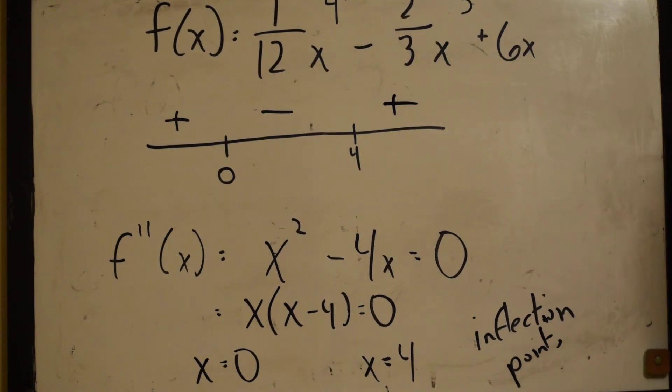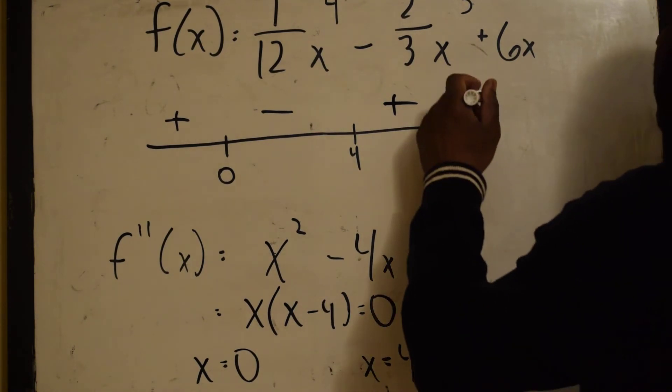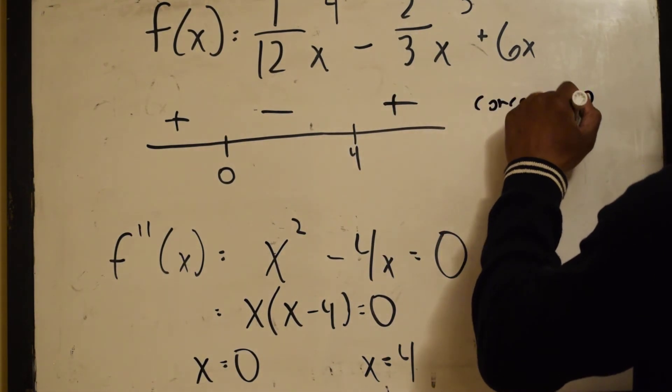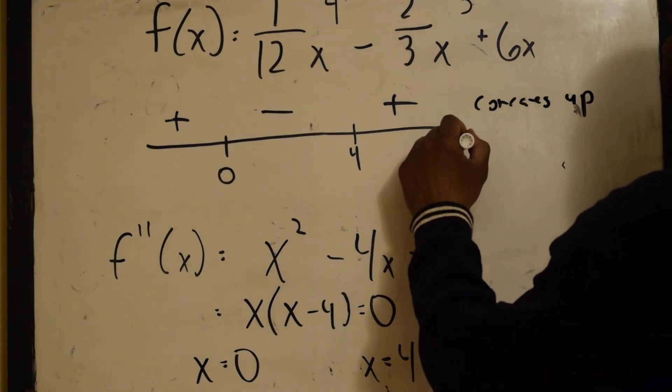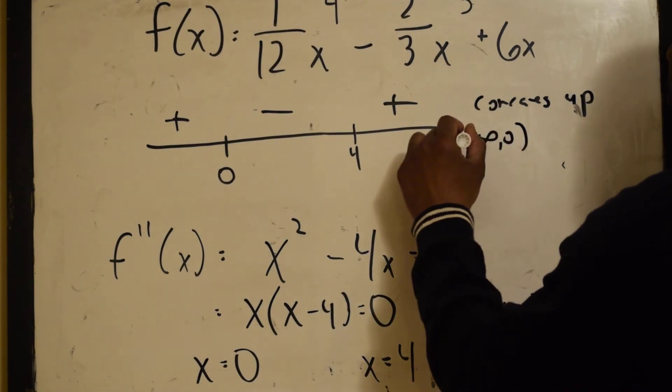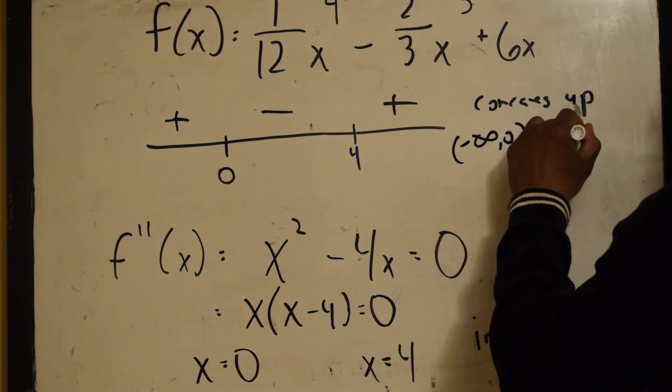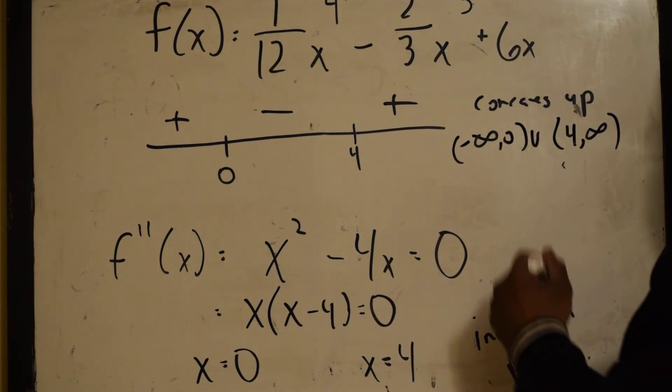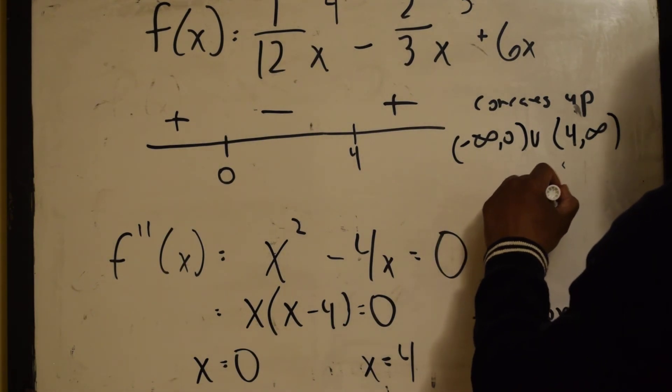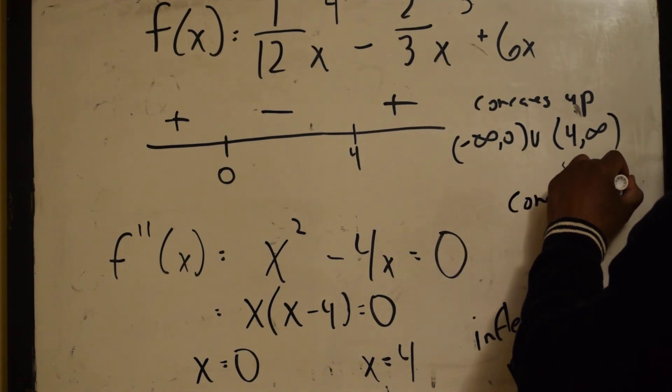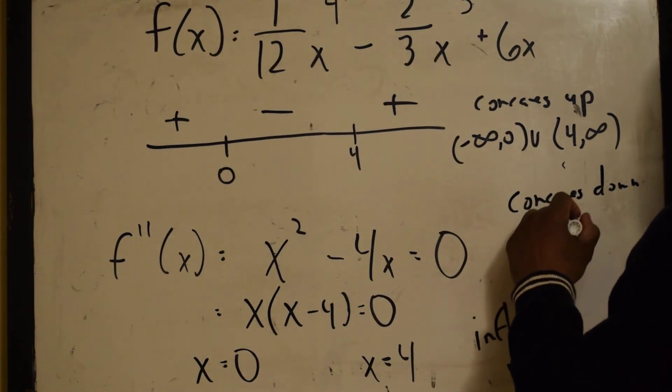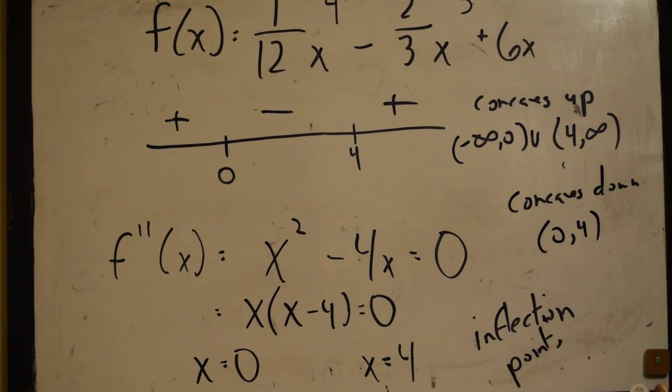All right, so now, we know this. We can say it concaves up from negative infinity to 0 and also from 4 to infinity. Okay, it concaves down here from 0 to 4.